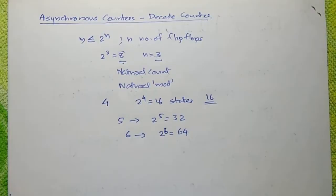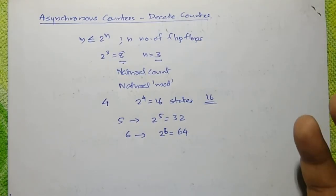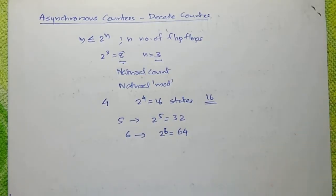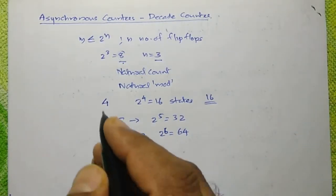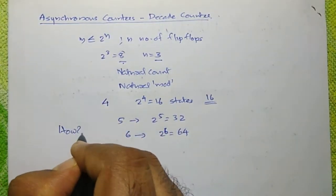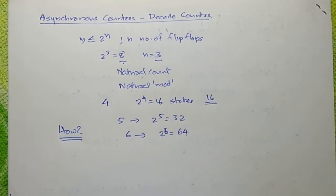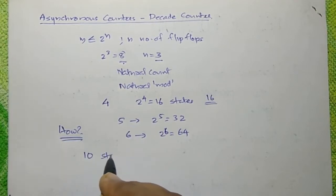There are situations which require other modes. For instance, we may need to fill 10 biscuits in a packet and want to use an electronic counter to control the number of biscuits going into each packet. Here, we want to make a counter which counts only up to 10 states and then resets. Let's start the design.